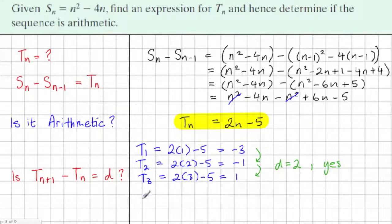So if we get an answer to term n plus 1 minus term n that is just a number answer, an answer that isn't dependent on n, a constant, well then we know it is arithmetic.